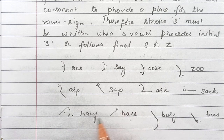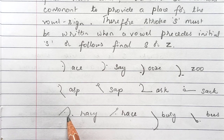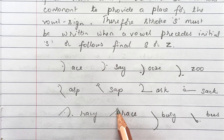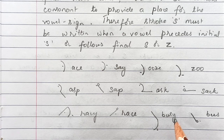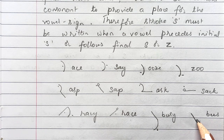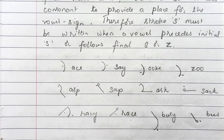In 'racy' and 'race,' to place the vowel we write stroke S. Where there is no vowel, we can write circle S. In 'busy,' to place the vowel we write stroke Z. In 'bees,' there is no vowel after Z, so we can write circle S.